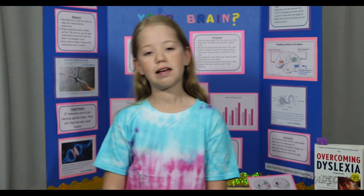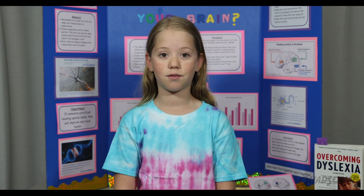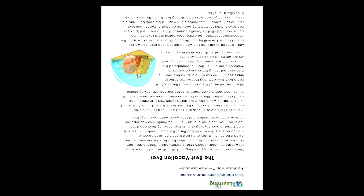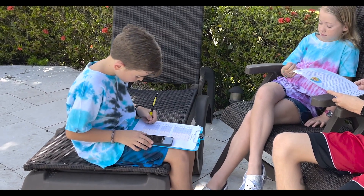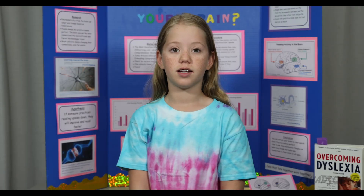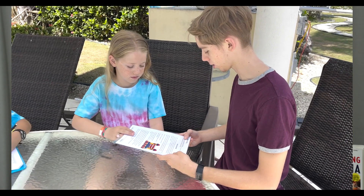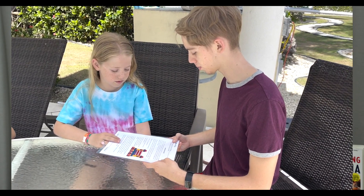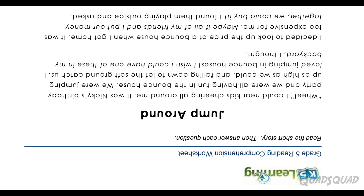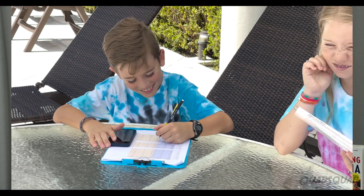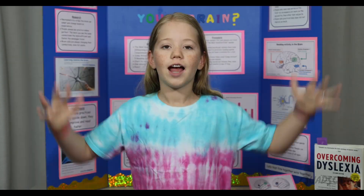Here's how we did our experiment. We had our friends, family, and anyone willing to be a test subject. We had them read upside down from a grade five level reading sheet called 'The Best Vacation Ever' for one minute, and we wrote how many words per minute they got on our chart. Then we instructed them to read upside down each day for a week. The next week, we brought them back and tested them on a new reading sheet called 'Jump Around.' We wrote how many words per minute they got and put it on a bar graph to compare the two.